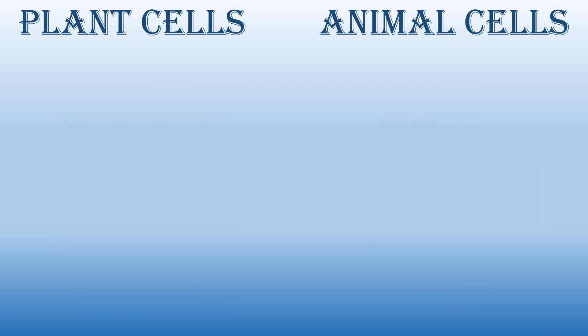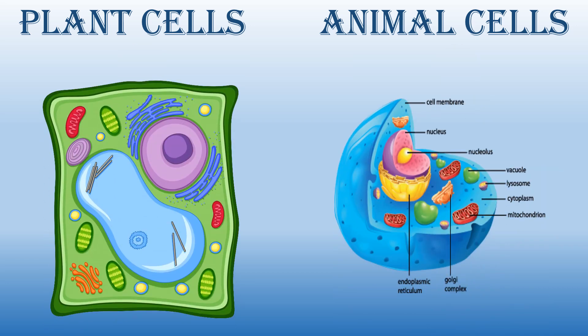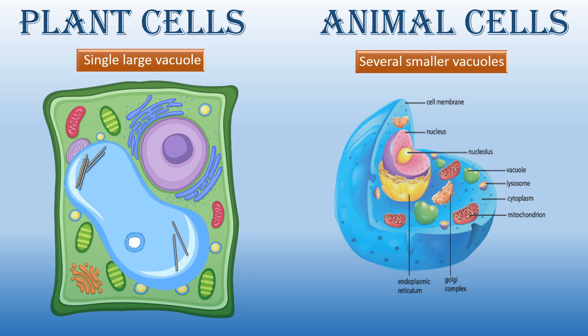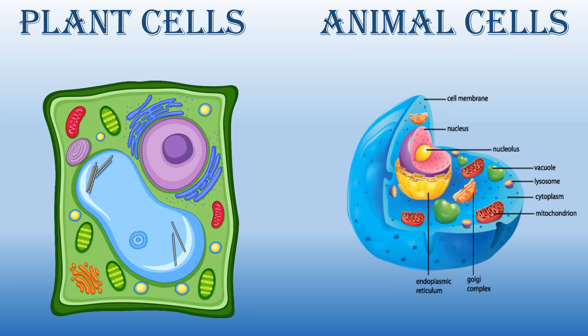The next point is vacuoles. Plant cells have one very large single vacuole, whereas in animal cells there are many more vacuoles but they are smaller in size. Look here — they are smaller and many more in the animal cell.